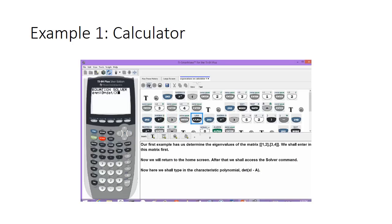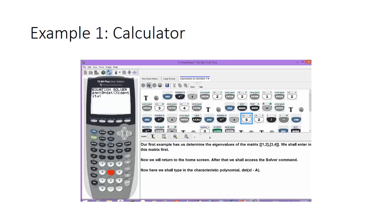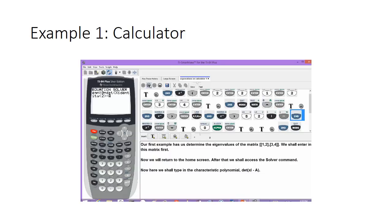Then we'll hit the x variable key and go back to the matrix menu. We'll select math again and choose option 5, the identity, and type in the number 2 — our identity matrix will be 2 by 2. Then we close that off, hit the minus key, go back to the matrix menu, and select matrix A.